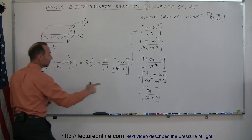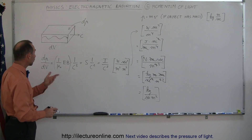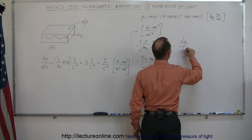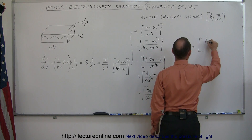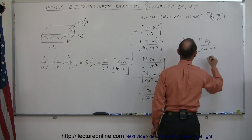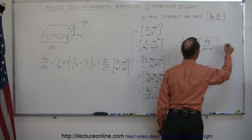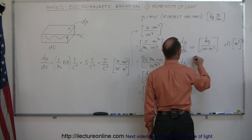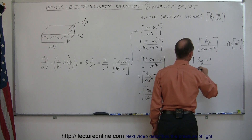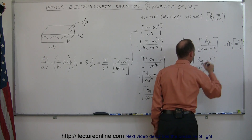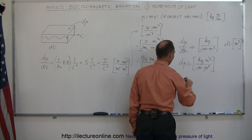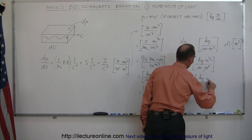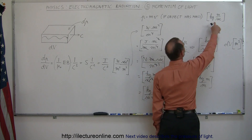Canceling one meter leaves meters squared, and canceling one second leaves kilograms meters squared per second squared — not quite momentum yet. But remember, this is momentum per unit volume, not momentum itself. So what if we move dV to the other side? The units of dp/dV are kilograms divided by seconds times meters squared. Multiplying both sides by dV — the units of meters cubed — gives kilograms times meters cubed divided by seconds times meters squared. The meters squared cancels two of those, leaving the units of dp equal to kilograms meters per second.